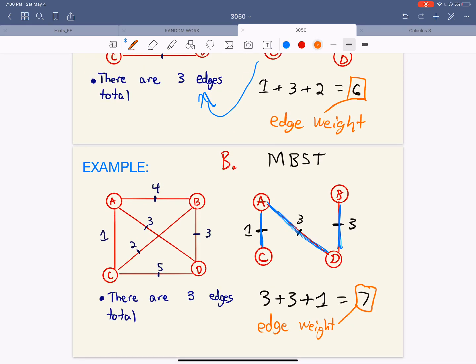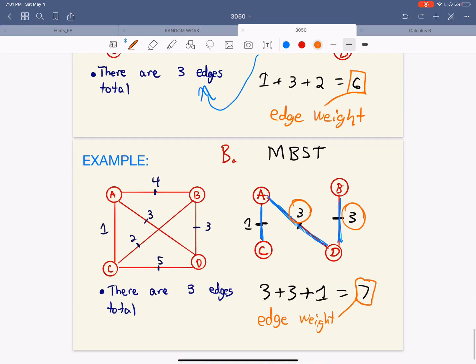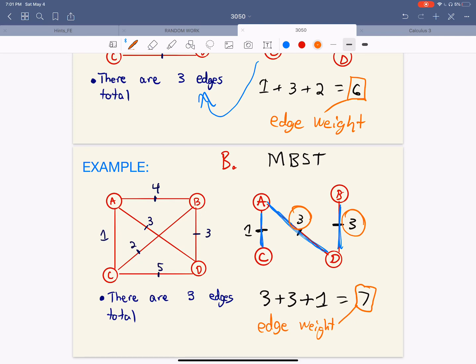But if we add up the weights of each edge, we actually get seven for the edge weight. And we can do this because there's two threes. So since we did that, we could eliminate the two and we get to every single node or vertex in the same amount of edges.